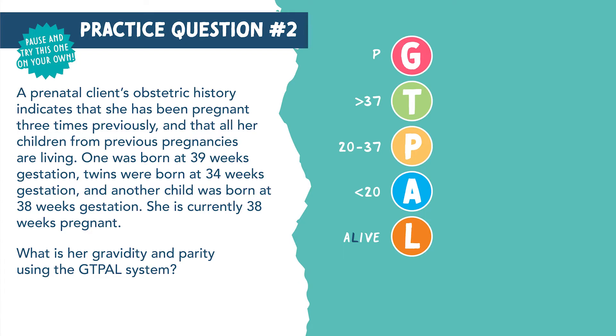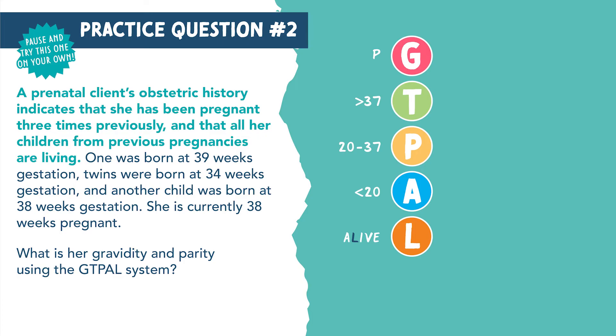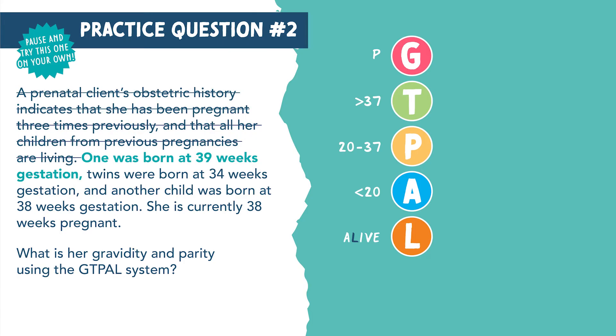So let's look at the first sentence. We need to be super careful before we just start tallying away — we need to gather more information, because the question is going to break apart each pregnancy. So let's read on. Her first pregnancy: one was born at 39 weeks gestation. We know she was pregnant once — a tally under G. 39 weeks is considered term — a tally under T. And we know she has one living child — a tally under L.